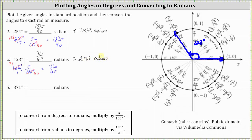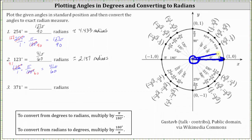For the last angle, we have 371 degrees. The initial side is along the positive x-axis. One complete rotation counterclockwise is 360 degrees, which brings us back to the positive x-axis. We need to rotate another 11 degrees counterclockwise, which brings us to approximately here. This is the angle 371 degrees in standard position.